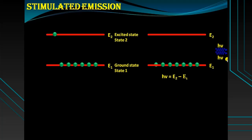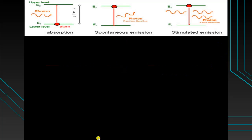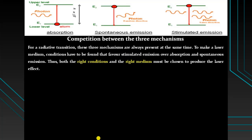We can say the incident photon stimulates or forces the excited electron to emit a photon and fall into the ground state — this is stimulated emission. In this process, both the incident photon and the emitted photon have the same energy, same frequency, same phase, and travel in the same direction. Stimulated emission is the only method to produce a monochromatic, unidirectional, and coherent beam of light — this is called laser light.